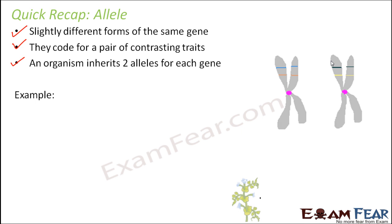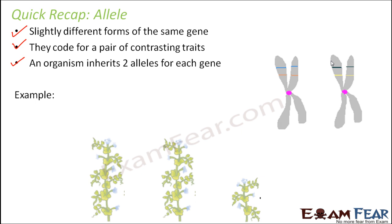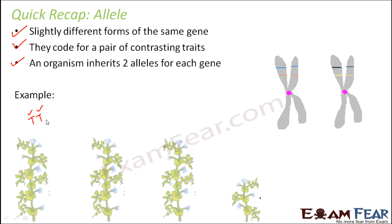We will use the example of Mendel's pea plant to make it easier. If this is a tall plant, we write the genotype as TT — so each T is an allele. This plant has inherited a capital T from one parent and a capital T from another parent. A tall plant can also be capital T, small t, meaning it inherited capital T from the father and small t from the mother. Similarly, a dwarf plant is small t, small t — both alleles are for the dwarf trait, and that is why the entire plant is dwarf.